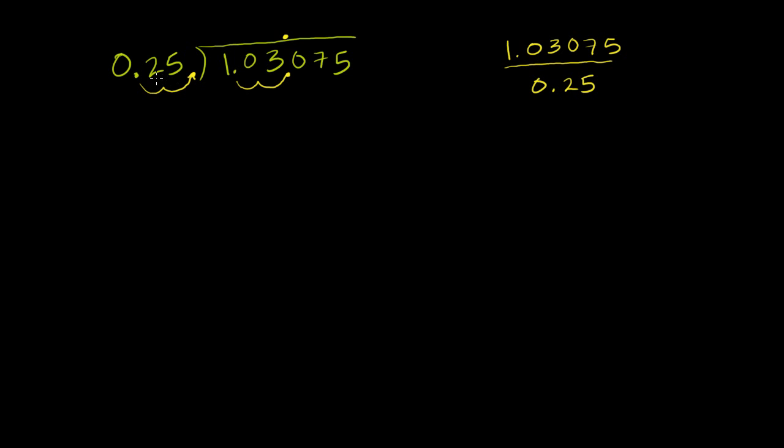And so we're multiplying the 0.25 by 10 twice. We're essentially multiplying it by 100. We're multiplying it by 100 in the denominator. This is the divisor. We're multiplying it by 100. So we also have to do the same thing to the numerator if we don't want to change this expression, if we don't want to change the number. So we also have to multiply that by 100. And when you do that, this becomes 25, and this becomes 103.075.